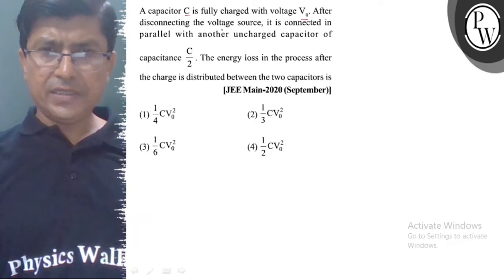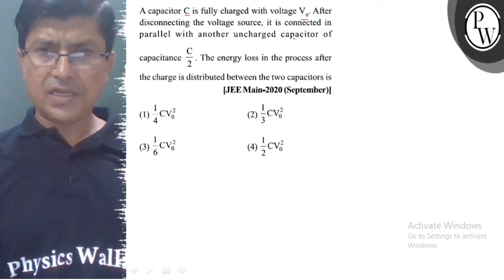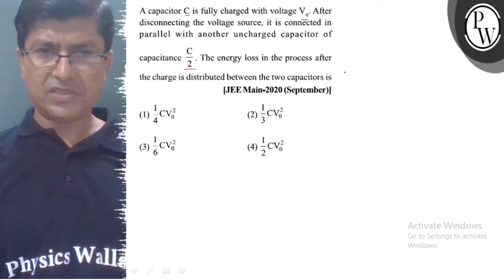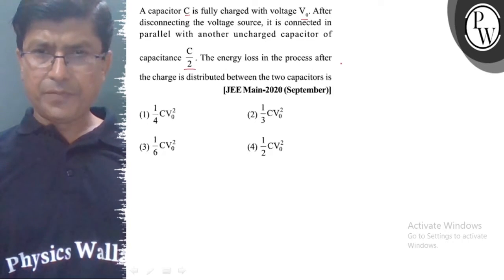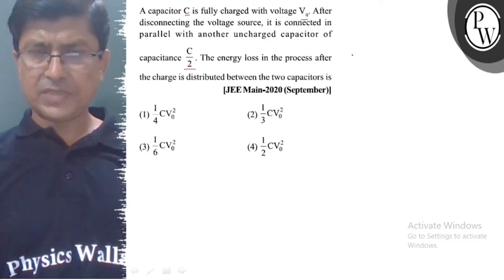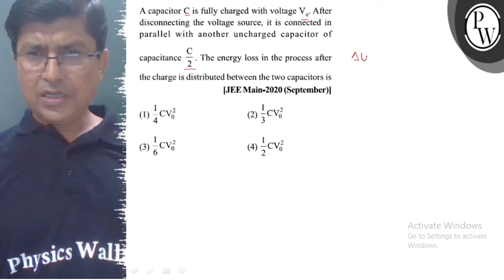After disconnecting the voltage source, it is connected in parallel with another uncharged capacitor of capacitance C/2. The energy loss in the process after the charge is distributed between the two capacitors—therefore we know that delta U...